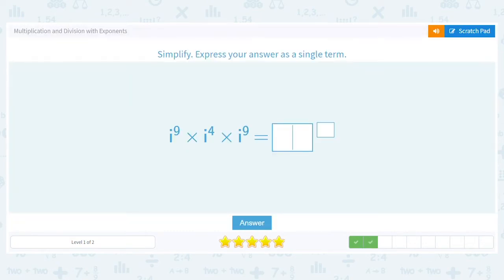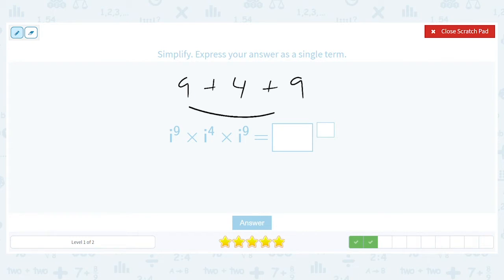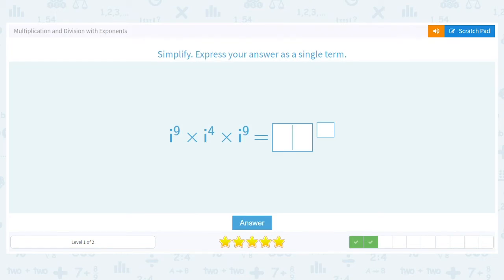How about this? So we have nine plus four plus nine. I'm going to do this in a fun way. I'll add these two together and get eighteen. Nine plus nine is eighteen. And then eighteen plus four is twenty-two. So we'll have i to the twenty-second power.